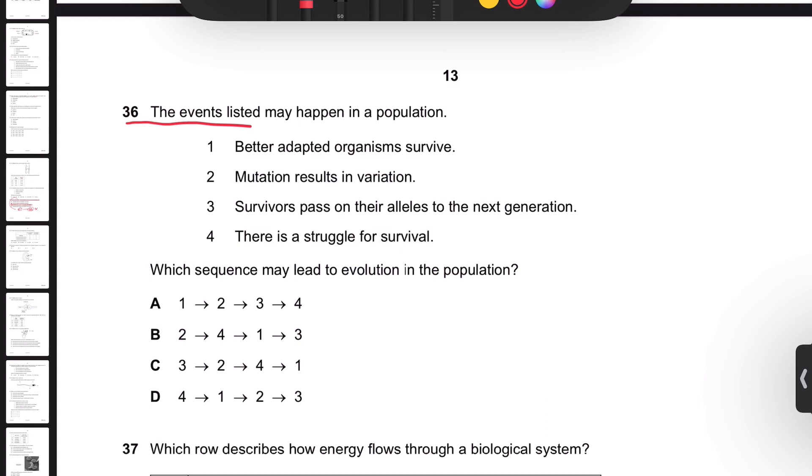Number 36: The events listed may happen in a population. Which sequence may lead to evolution in the population? For evolution to occur, there are some criteria. First, there needs to be a variation within the population so that some may be adapted.